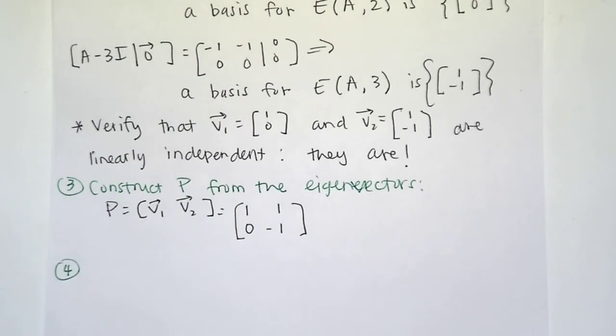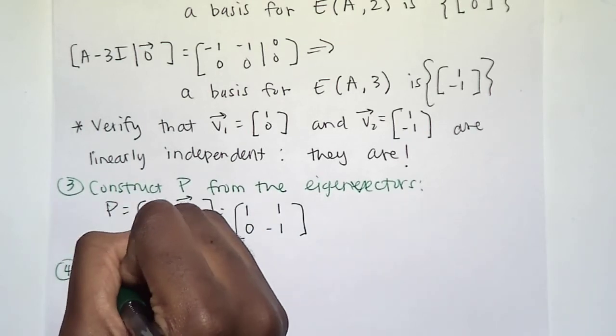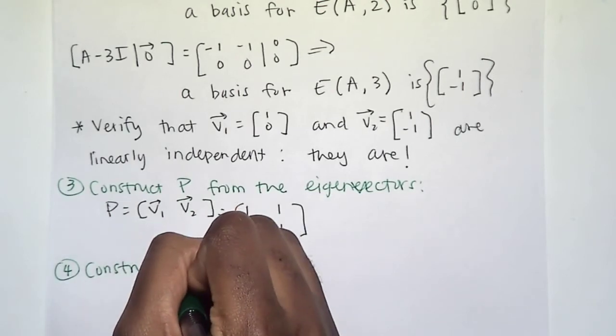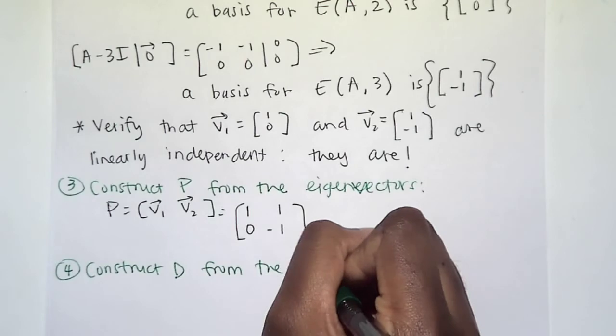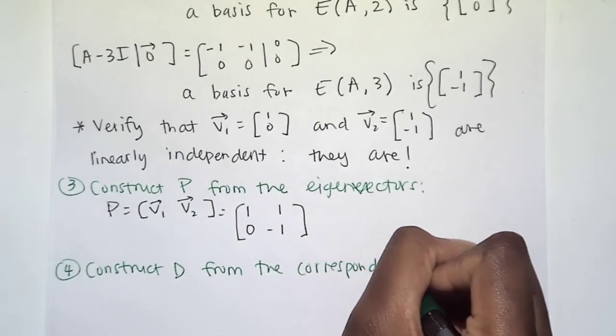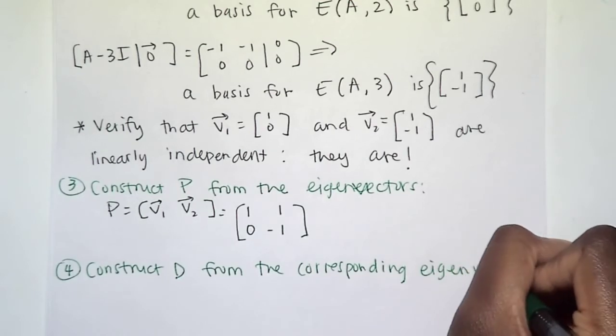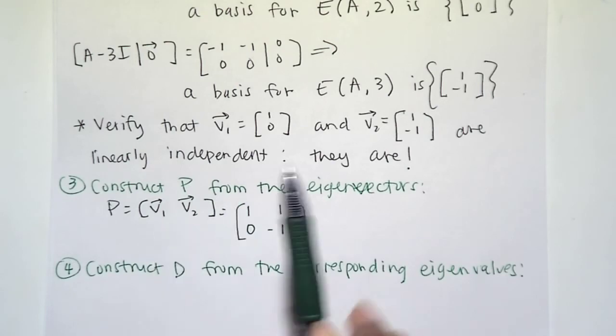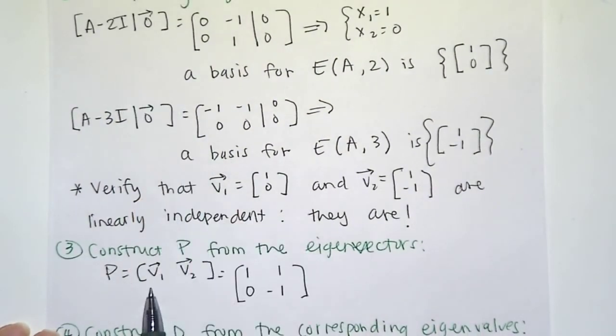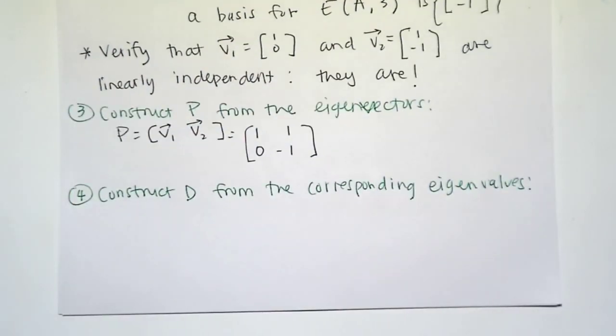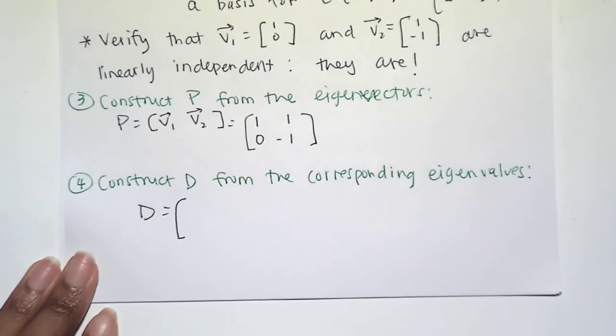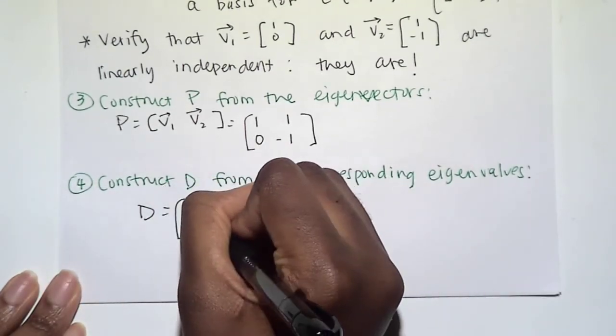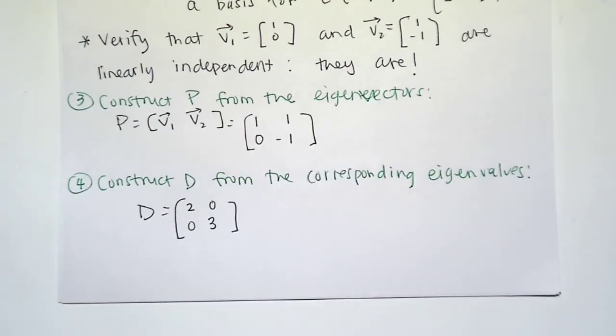Step four, we need to construct D, because we're trying to diagonalize P, D, P inverse. We will construct D from the corresponding eigenvalues. So if we did v1 first in our matrix P, we have to use the eigenvalue that it came from, the 2. So D will have our eigenvalues down the diagonal, 2 and 3, and then 0s everywhere else.